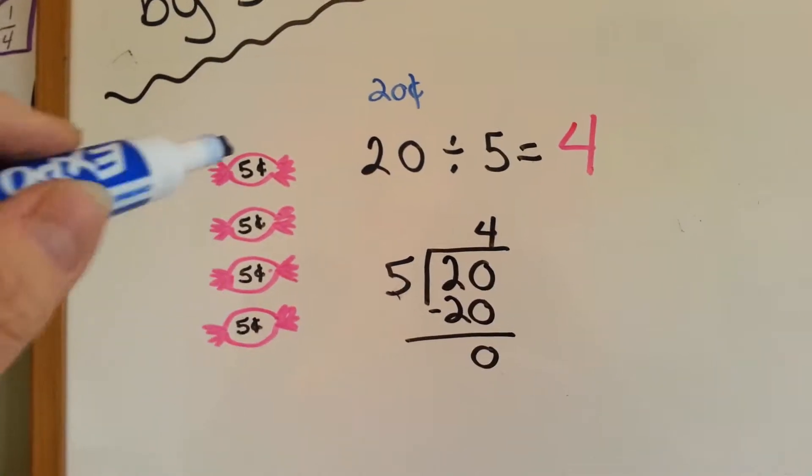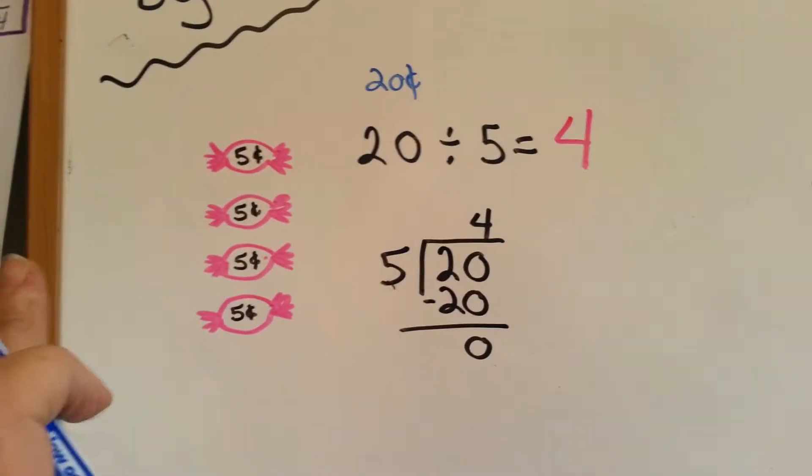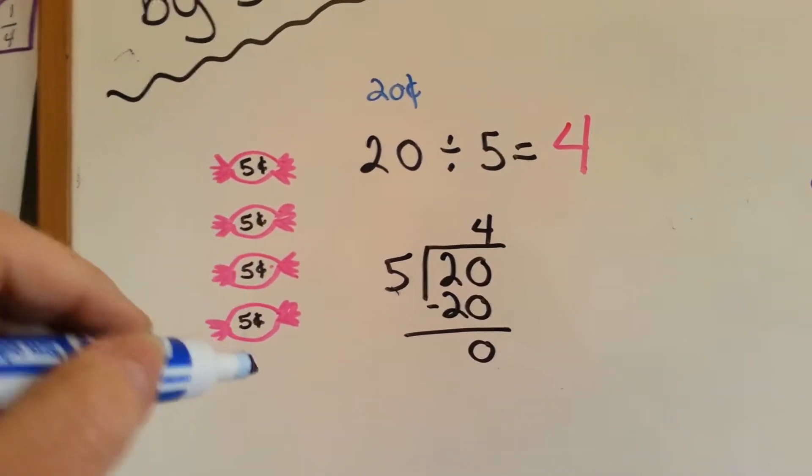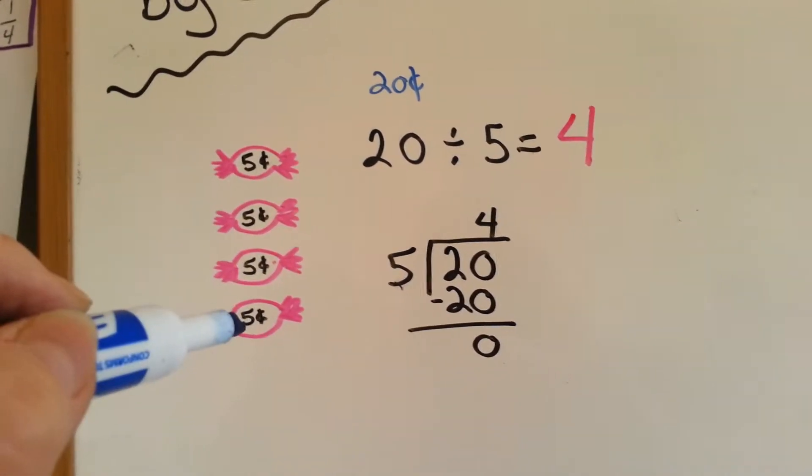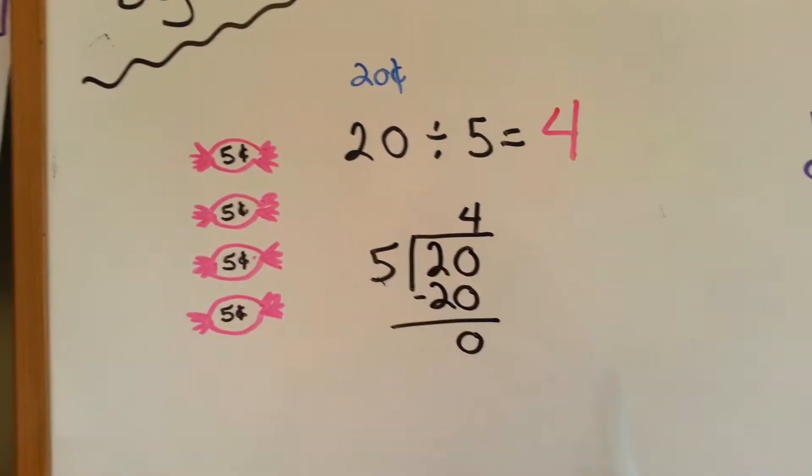And you wanted to figure out how many you could buy. Well, what you could do is count by 5's, that's if there's no sales tax. You count by 5's to see how many candies you can get. 5, 10, 15, 20. So you could buy 4 candies.